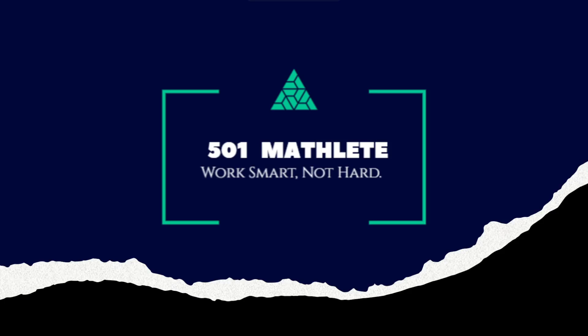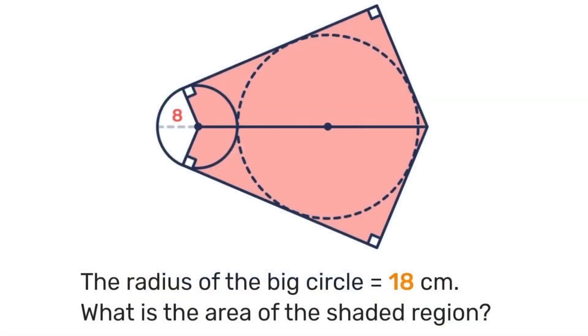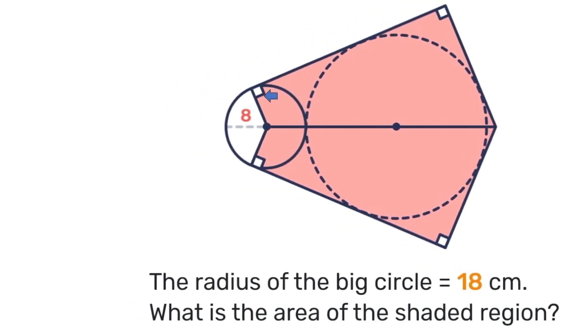Good day and welcome to 501Markets. In today's problem we're given this diagram where the radius of the smaller circle is 8 and the radius of the big circle is 18. With that information we're to determine the area of the shaded region. Pause the video here, give it a try, see what you come up with. I'm gonna solve it like this.